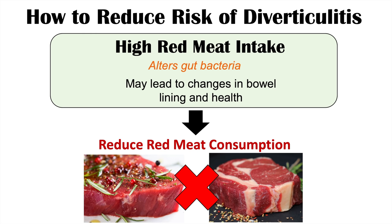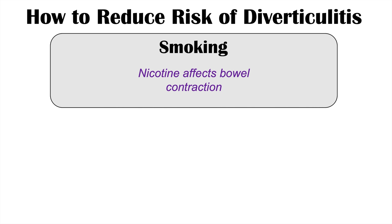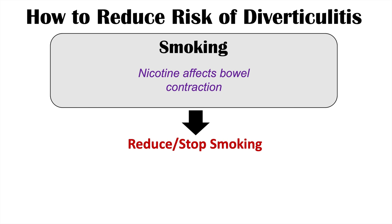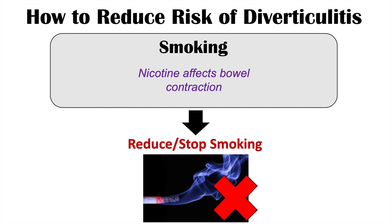Another risk factor for diverticulitis is smoking. Nicotine from cigarette smoking affects bowel contraction, which can increase your risk of diverticulitis and diverticular bleeding. The best course of action is to reduce or stop smoking entirely.